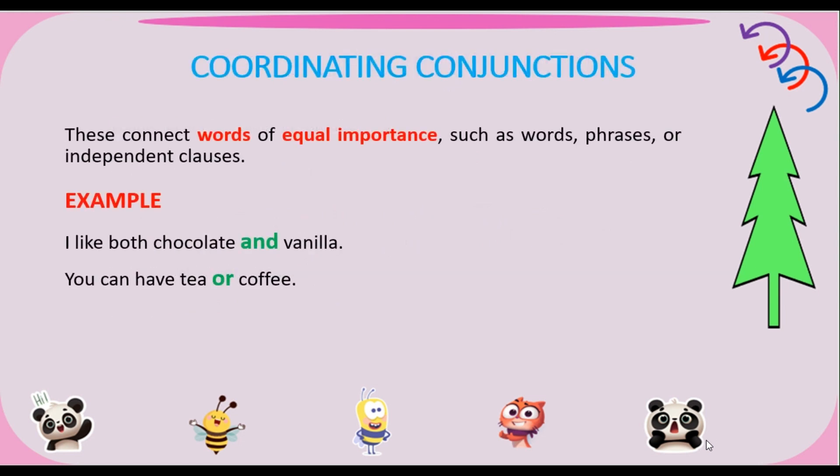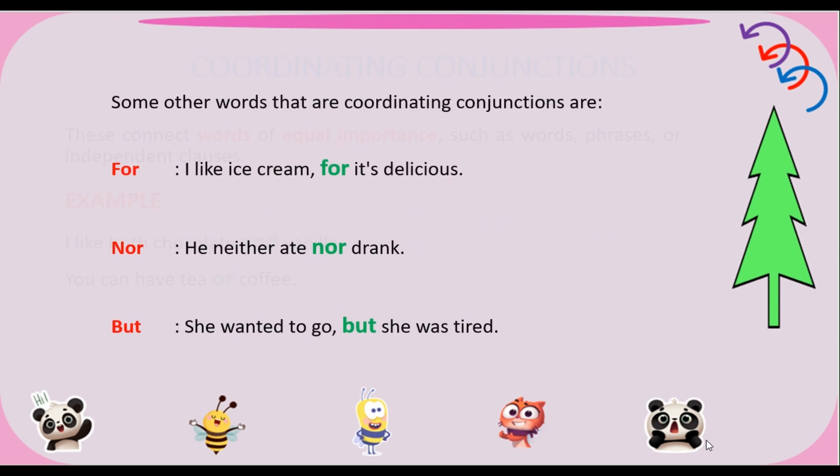First of all, Coordinating conjunctions. These connect words of equal importance, such as words, phrases, or independent clauses. Example: I like both chocolate and vanilla. You can have tea or coffee. Some other coordinating conjunctions: For — I like ice cream, for it's delicious. Nor — he neither ate nor drank. But — she wanted to go, but she was tired.